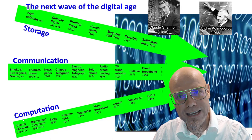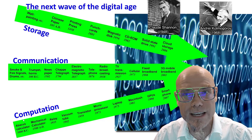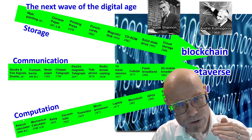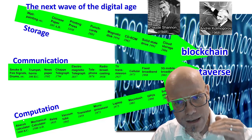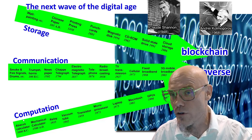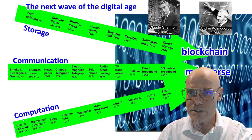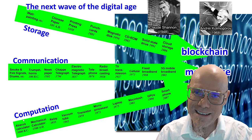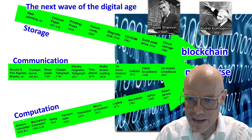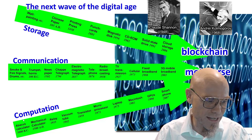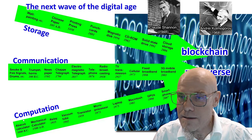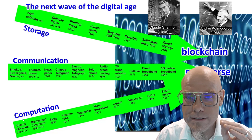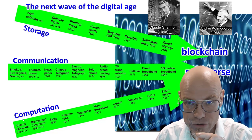This evolution has continued and is still continuing — converging and evolving. These three pillars of information through space, through time, and transformation keep going on. Just to show that this is still ongoing, consider the blockchain, the metaverse, and of course generative artificial intelligence. It's very important to understand that it works both with information and with computation — the bit is the key of the digital age.